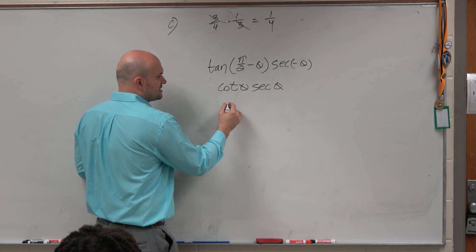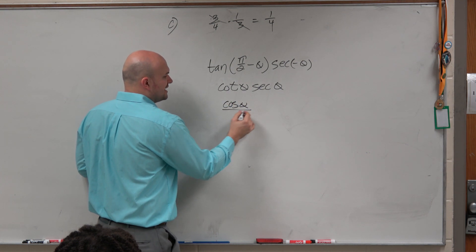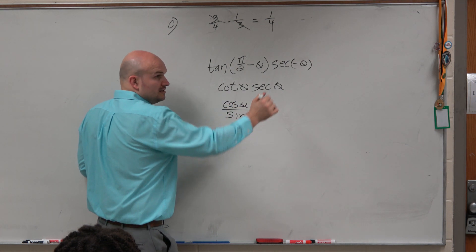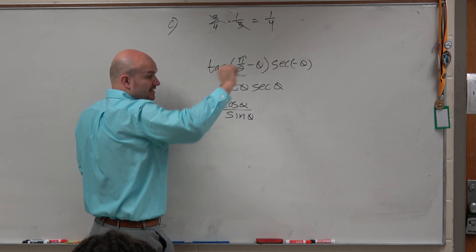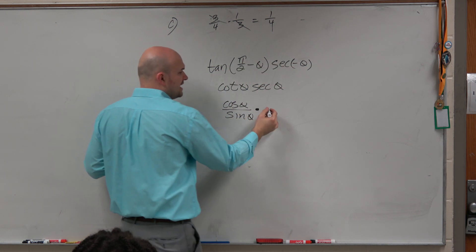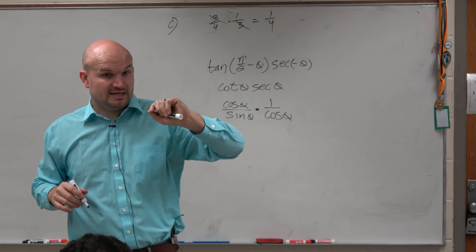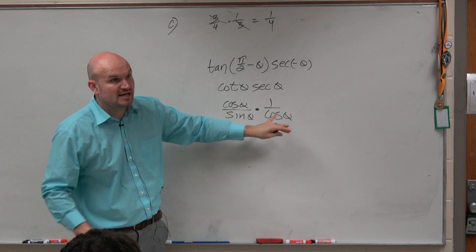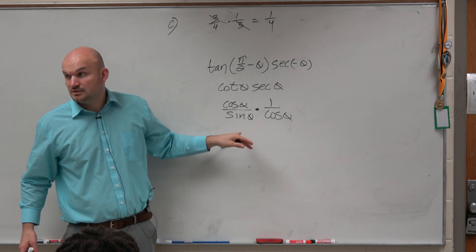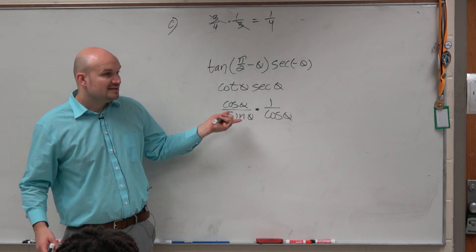So if I rewrite cotangent as cosine over sine of theta, which is my quotient identity, and I rewrite secant as 1 over cosine of theta, which is my reciprocal identity. And you guys agree with me, that's okay to do it that way. It's okay?